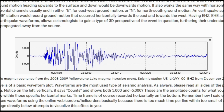Here we see a clip of the possible magma resonance from the 2008-2009 Yellowstone Lake magma intrusion event from seismic station LKWY00BHZ for December 29, 2008. This image is of a basic waveform plot. Waveforms are the most used type of seismic analysis and the most important. Please read all sides of the plot first before reading the data. Notice on the left, vertically, it says counts, and shows both 5,000 and minus 5,000 — the amplitude counts for what you see within the analysis window.